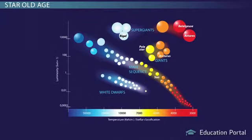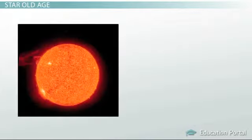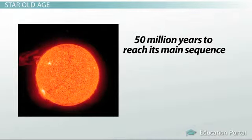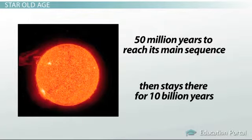How long a star lives depends on its mass and how quickly it consumes hydrogen. Larger, brighter stars burn out faster than smaller, cooler ones. A star, like our sun, takes about 50 million years to reach its main sequence, and then stays there for 10 billion or so years.